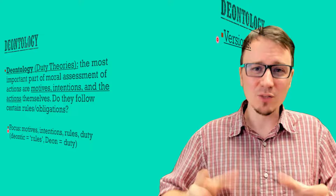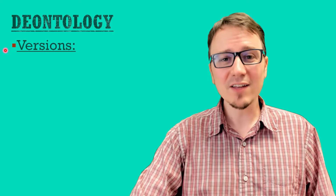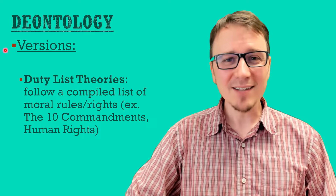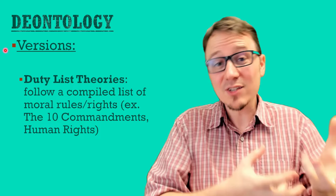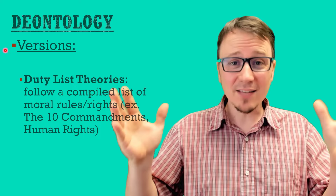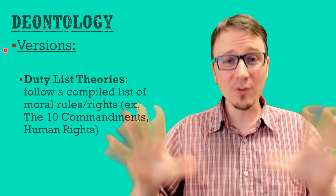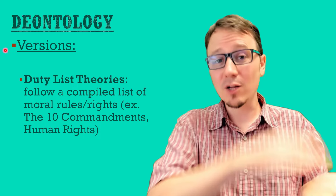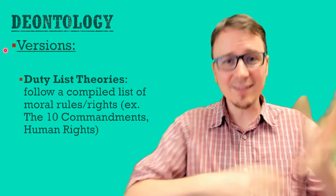Deontology is the most diverse of the three main families — there are so many different versions, because depending on what set of rules you come up with, it's going to be a different version of deontology. Some easy examples include the Ten Commandments: if those are the rules you think you should live by, that would be a version of deontology, asking whether your actions, motives, and intentions follow those rules. Another example is human rights: if you have a certain list of rights that you say everyone must follow to be a good person, that would also be a version of deontology.